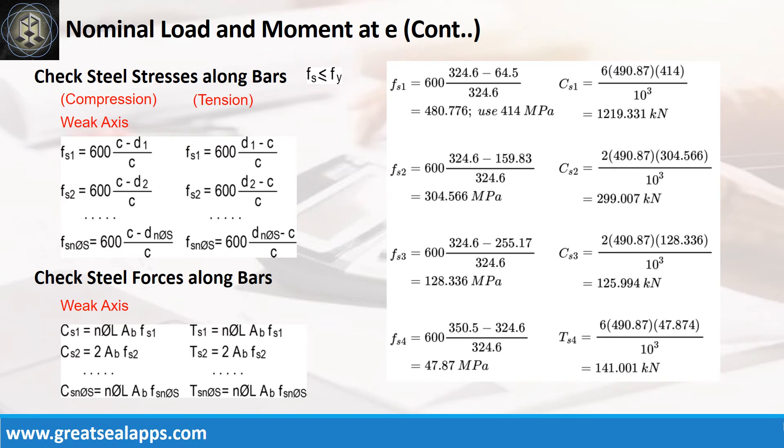Follow the given computations for stress and force of each bar layer. Stress at D sub 1 equals 414 MPa with compressive force equals 1219.331 kN. Stress at D sub 2 equals 304.566 MPa with compressive force equals 299.007 kN. Stress at D sub 3 equals 128.336 MPa with compressive force equals 125.994 kN. Stress at D sub 4 equals 47.87 MPa with tensile force equals 141.001 kN.